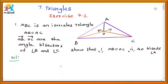Welcome. Today we will discuss triangles. In this, we go through exercise 7.2, the first question. ABC is an isosceles triangle. In this triangle, the side AB is equal to AC, and the rays OB and OC are the angle bisectors of angle B and angle C. We have to show that OB is equal to OC and AO bisects angle A.